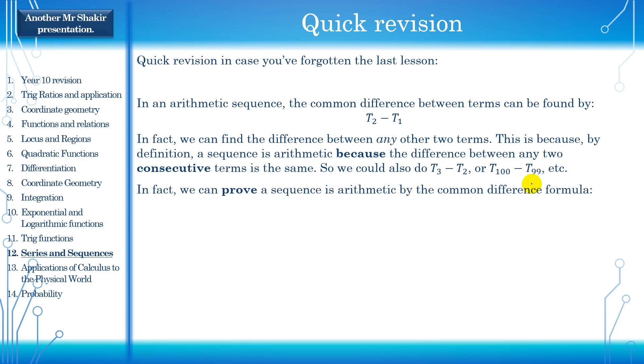In fact, we can prove a sequence is arithmetic by the common difference formula. Second term minus the first term has to equal the third term minus the second term. Of course, it doesn't need to be the first, second, and third terms here. You could prove that the difference between any three consecutive terms is the same. You could have, for example, the 50th term minus the 49th term would have to equal 51st term minus the 50th term. Any three consecutive ones, you'd have to show basically that the difference between them is the same. Because that's what an arithmetic sequence is. The common difference between each term is the same. It's adding or subtracting.